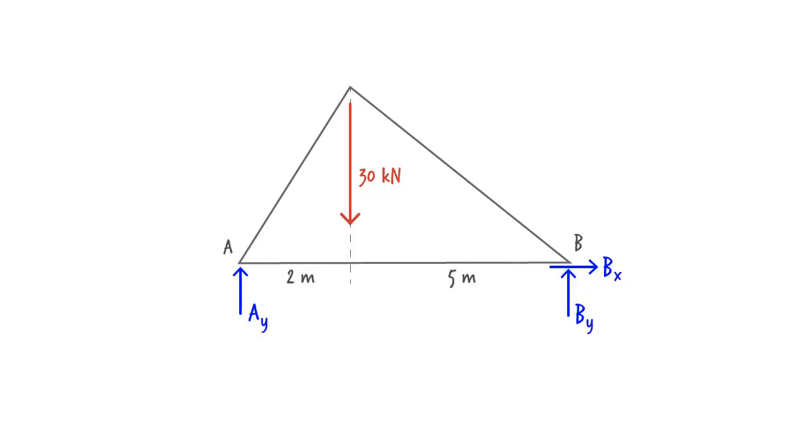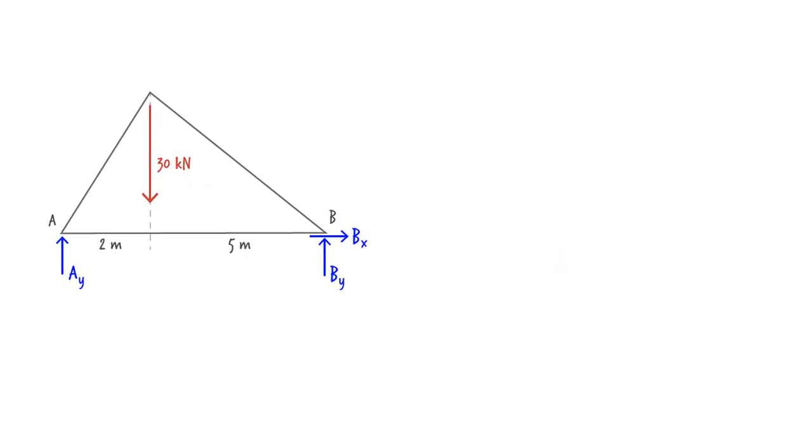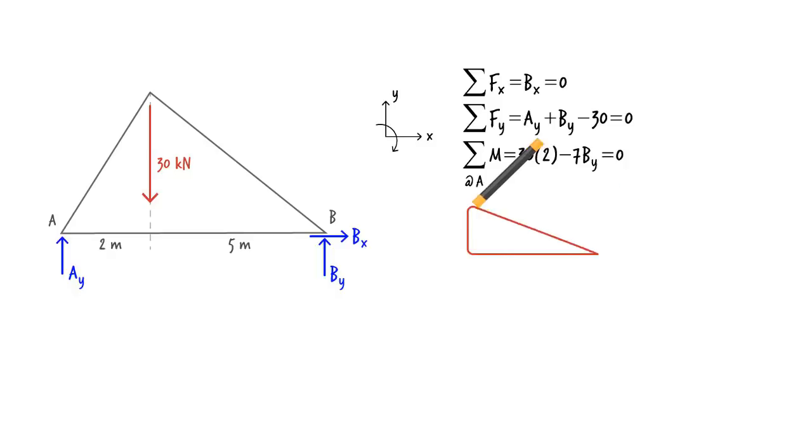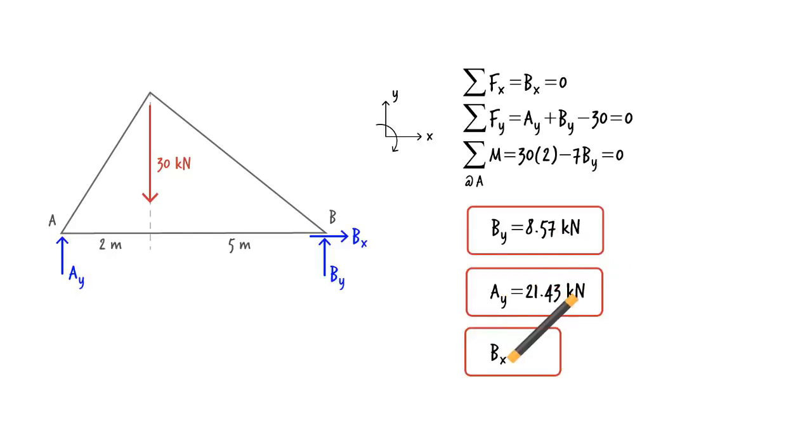Using this free body diagram, we can easily write three equilibrium equations. Here is our coordinate system. The equations are: solving the last equation for BY we get, then from the second equation we get, and the first equation gives us.